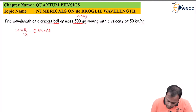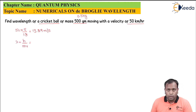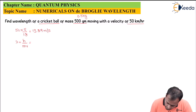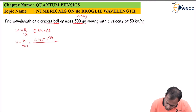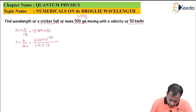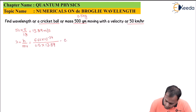Using the formula lambda equals h upon mv, and substituting the value of h as 6.62 × 10⁻³⁴, divided by mass of the cricket ball which is 0.5 kg, multiplied by velocity which is 13.89 m/s. On solving, you get lambda equal to 0.95 × 10⁻³⁴ meters.